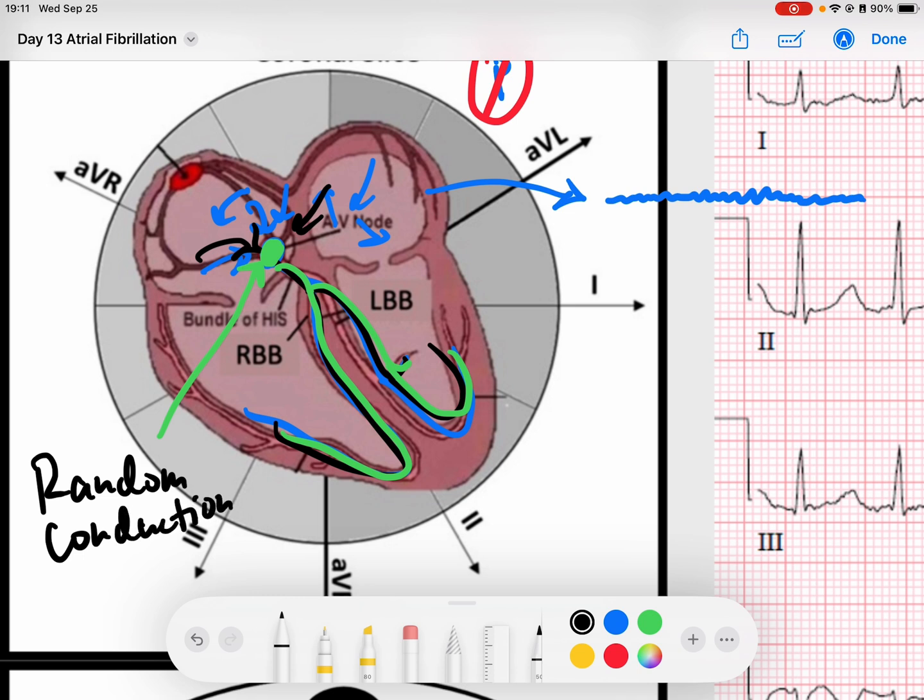Remember in our sinus rhythms, the conduction from the AV node down to the ventricles is very coordinated. We get this nice sinus beat fires off and then it sends signal down. We know the next thing that's going to happen is that signal is going to go down to the ventricles and it's going to happen very coordinated effort. Then the cycle is going to reset.